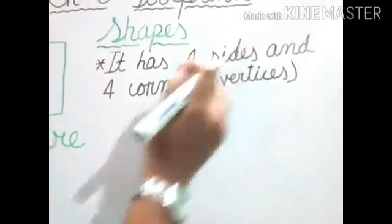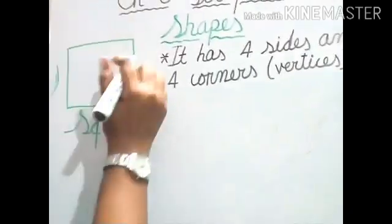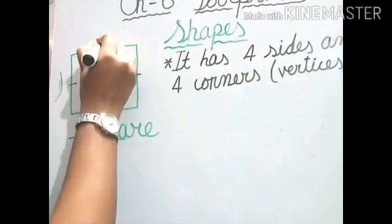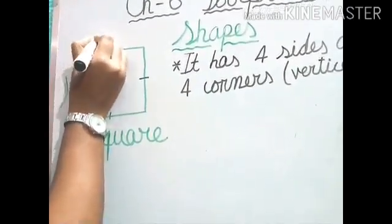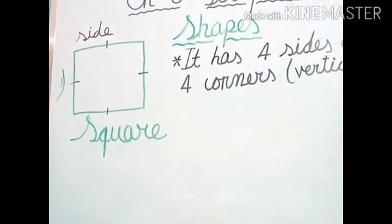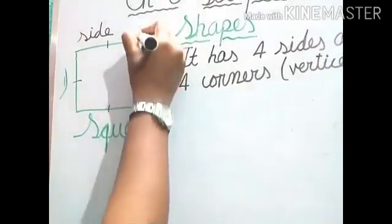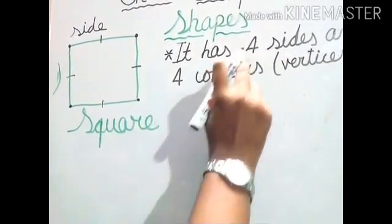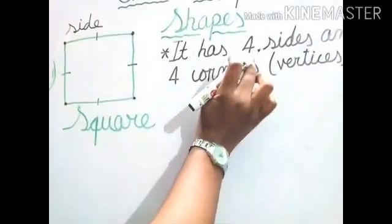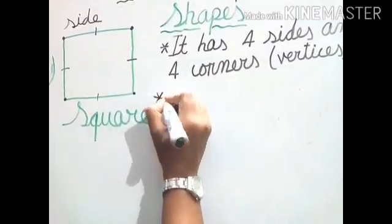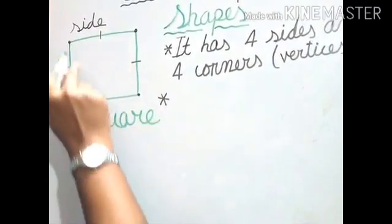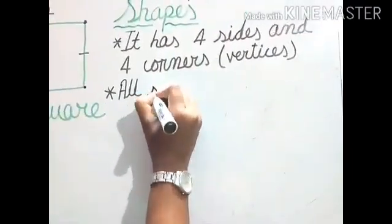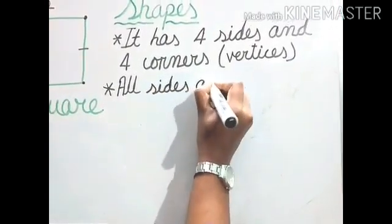So which thing do we call side and which thing do we call corner in this shape? Like this one, and this one, and this one, and this one is a side. One, two, three, four — these are all four corners. And one, two, three, four — four sides. Now the next property of square. Can you see all the four sides are equal? So the next property: all sides are equal.